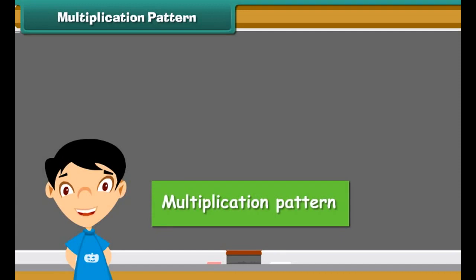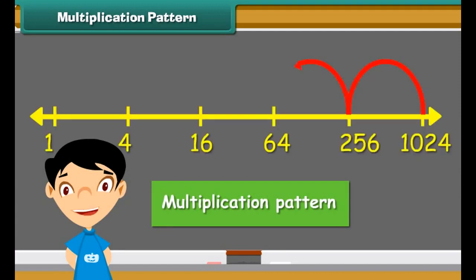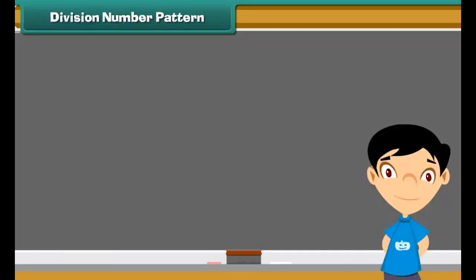The numbers ending with one, three, five, seven, and nine are called odd numbers. Both in even and odd numbers, we skip counting by twos. Select the correct option.